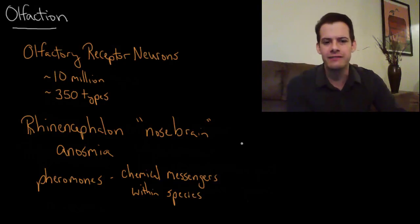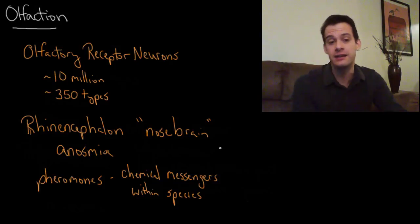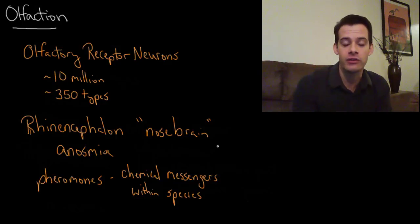Humans however don't have a specialized auxiliary olfactory system but we can detect pheromones and humans do release pheromones and they can have some influence on behavior. Now one example of this is that humans are actually able to detect kinship based on pheromones. In other words particular smells you can tell who's related to you or not.